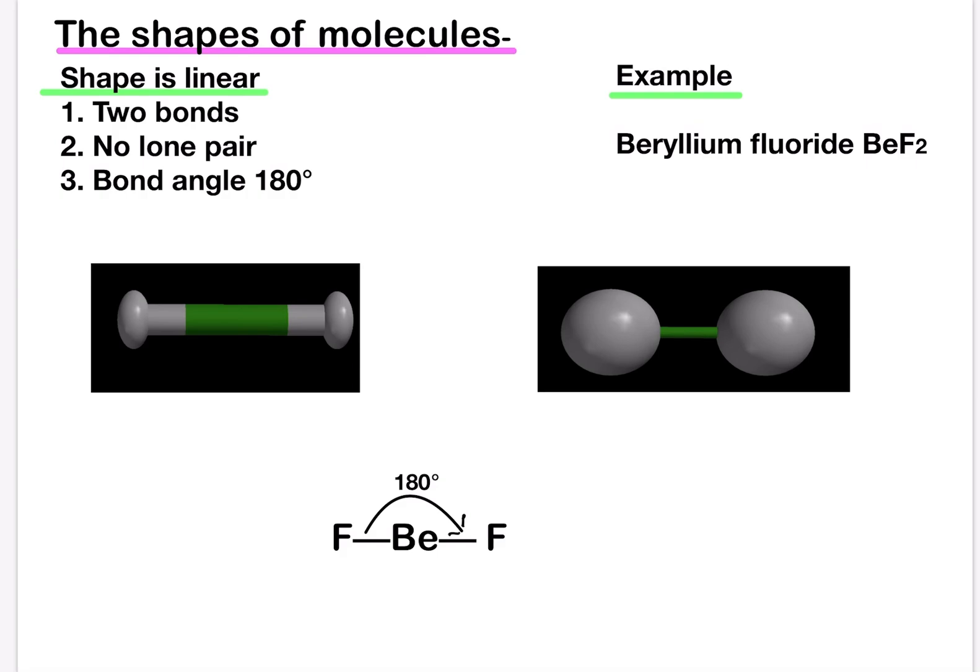You'll see BE is in the center. That's the central atom and then fluorine are at both sides and therefore they repel each other and go to an extreme angle where the repulsive force is the least and they form an angle of 180 degrees.